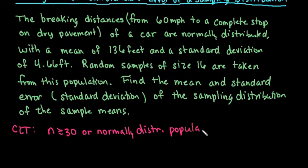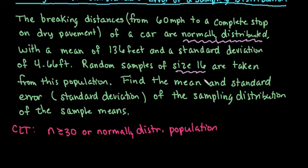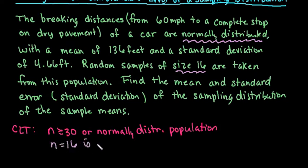Let's check whether this condition is met in this problem. It tells us that we have a sample of size 16. If this were not a normally distributed population, you could not use the central limit theorem — you wouldn't necessarily end up with a normal distribution with such a small sample size. But because it comes from a normally distributed population, n equals 16 is okay.